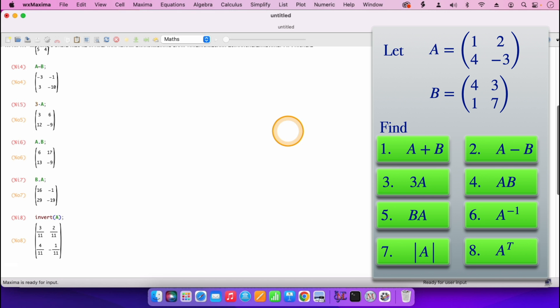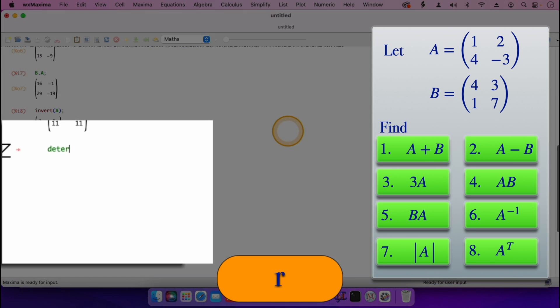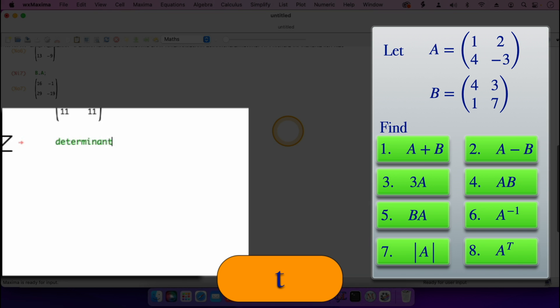Then for question number seven, the determinant of the matrix A. So I'll just type determinant of the matrix A. Determinant of the matrix A, shift enter, and it gives us the determinant of A is minus 11.